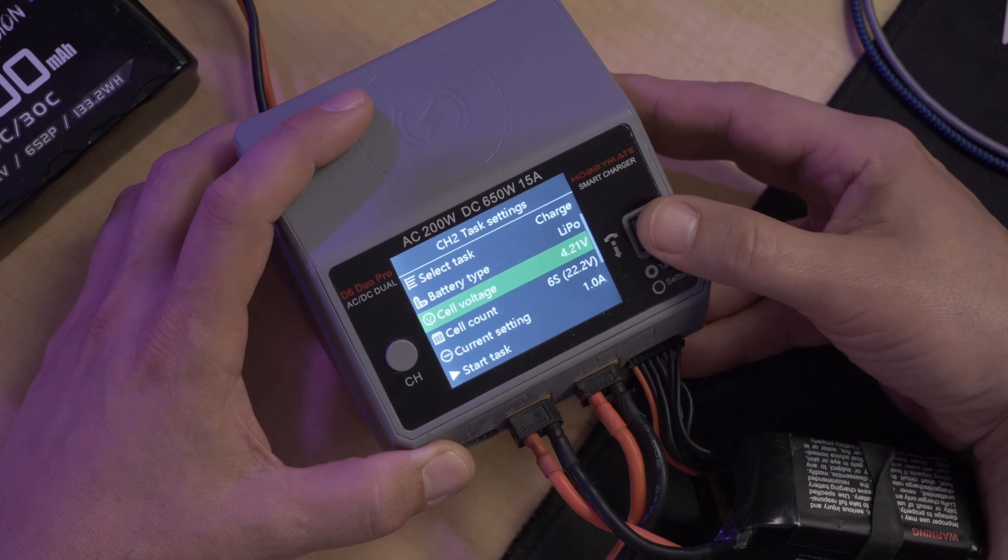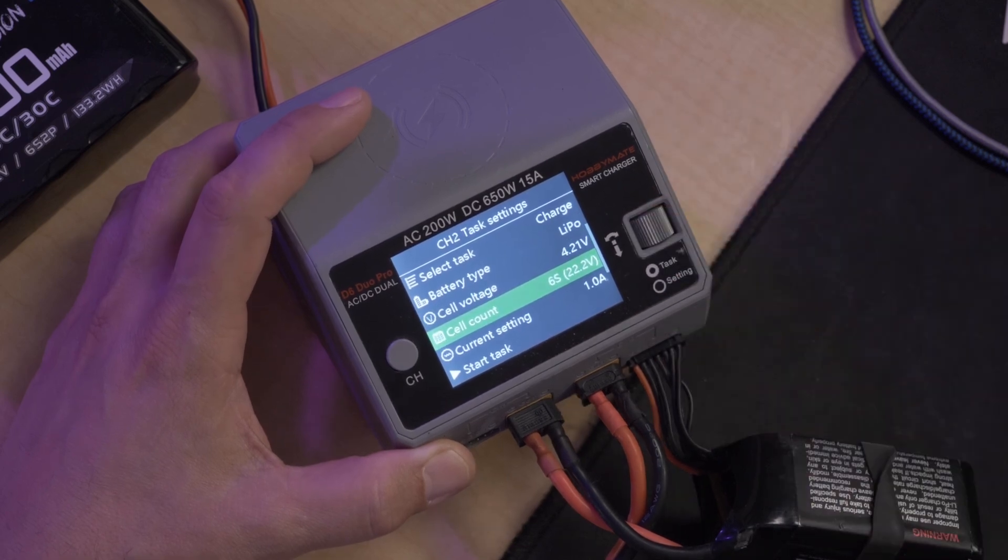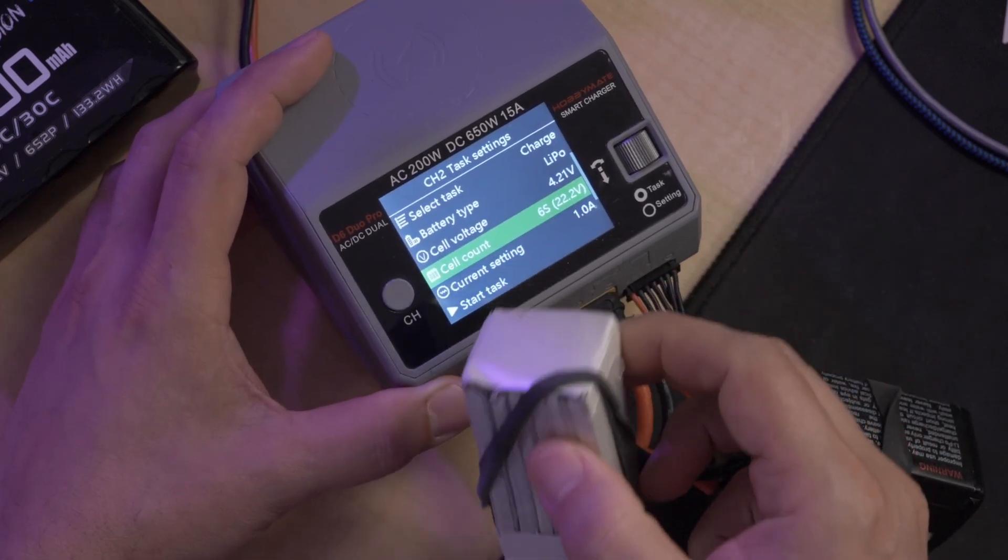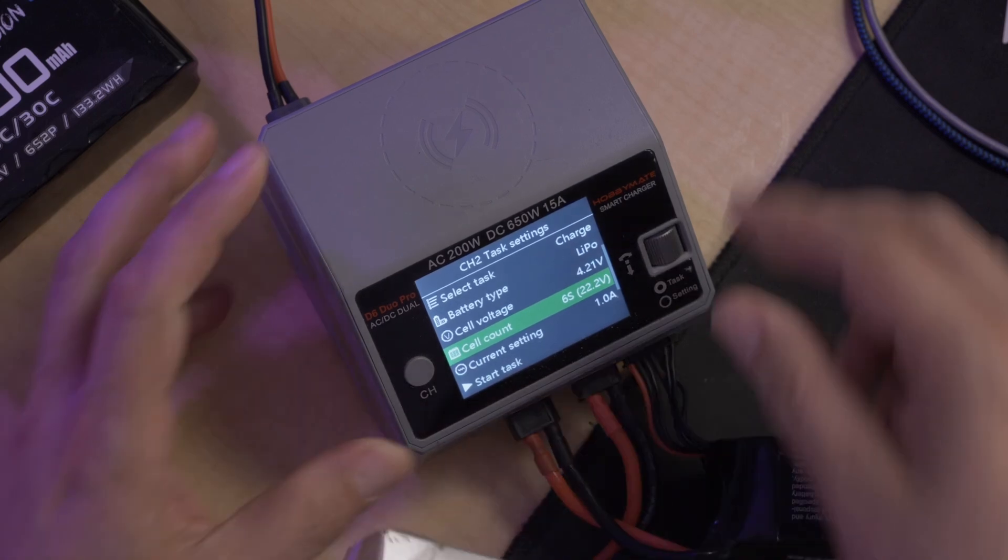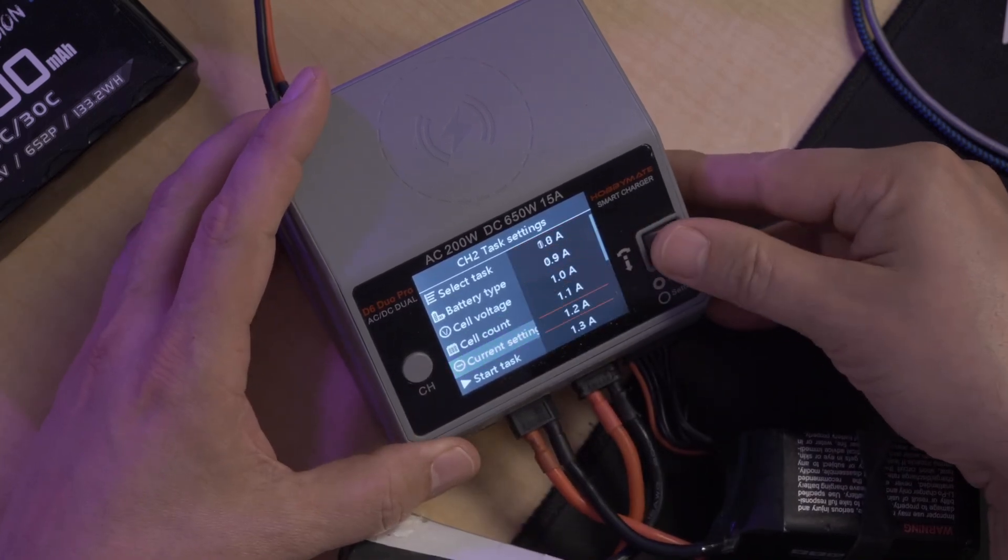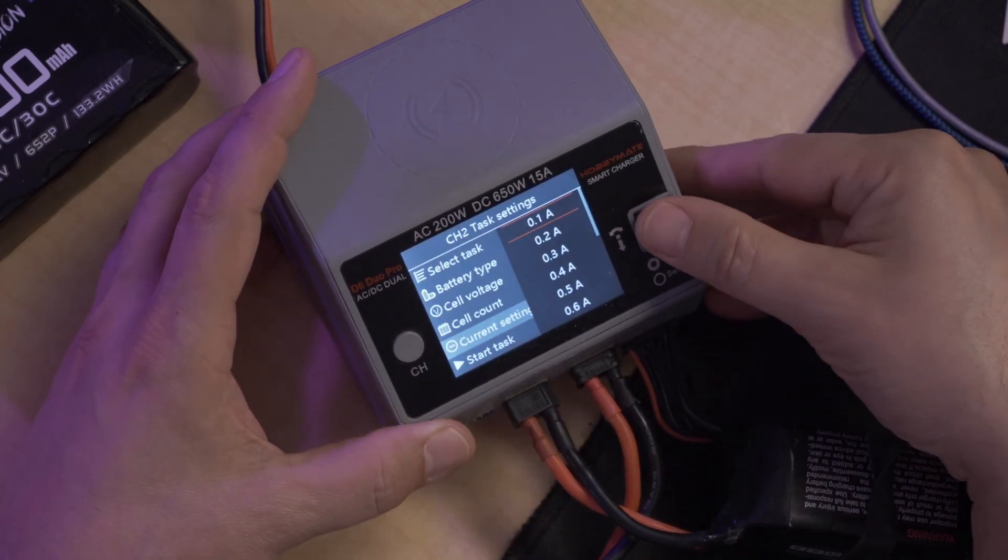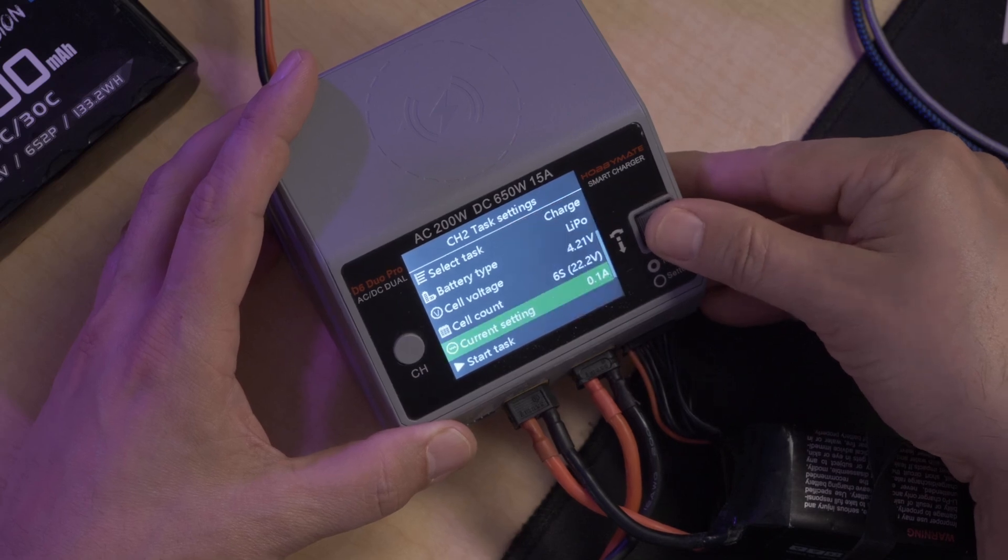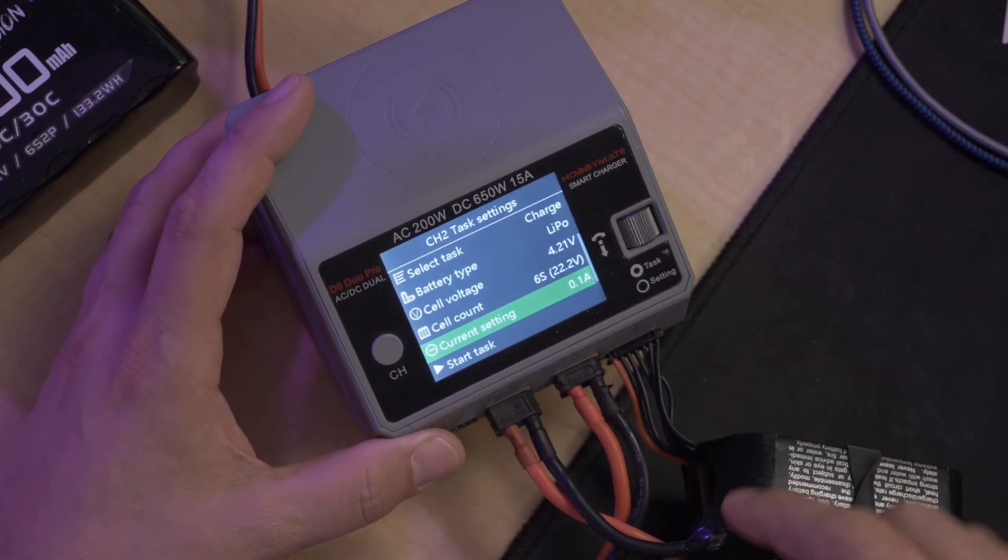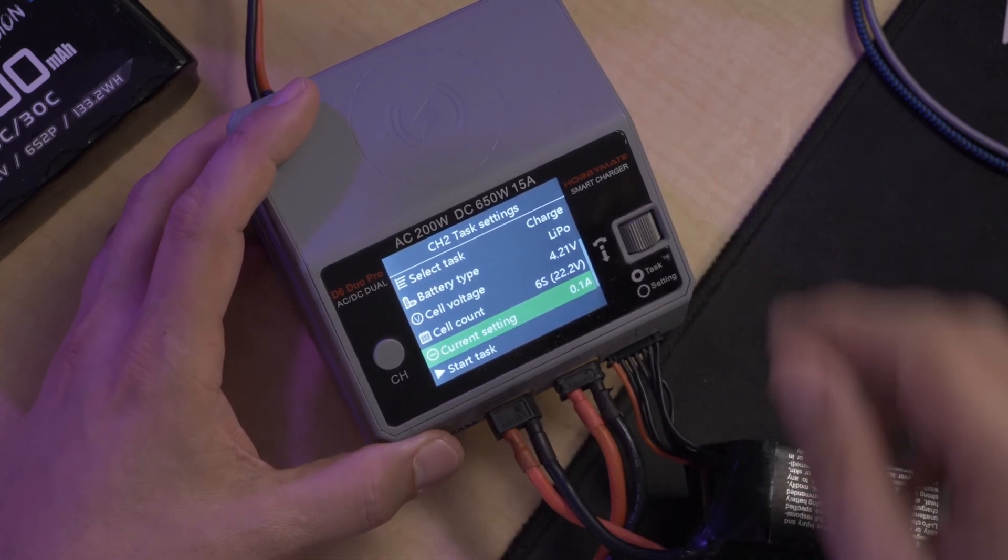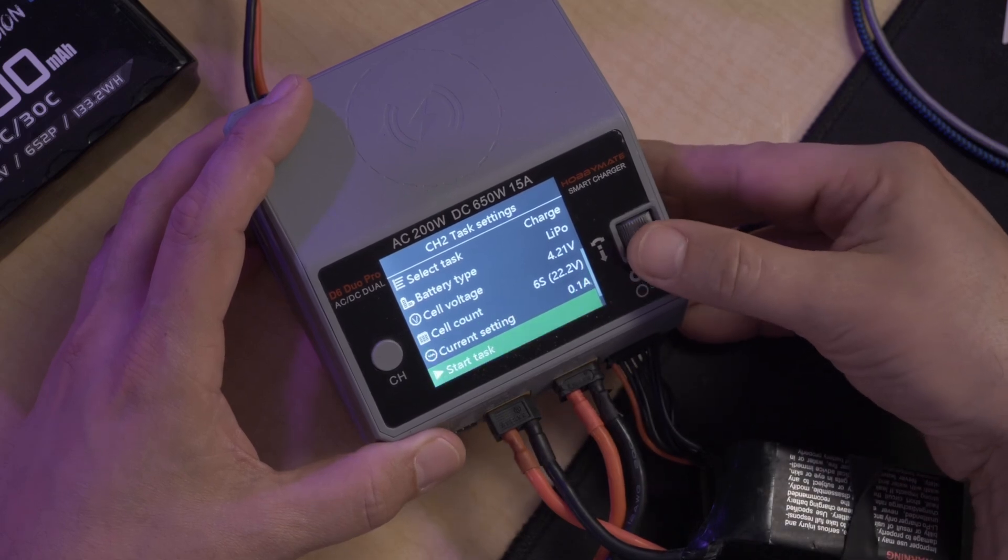If it does try to charge cycle, the worst that'll happen is that this battery, instead of getting one amp... I'm gonna put it at the minimum. Instead of getting 0.1 amps it'll be at a higher... no, but it won't. Anyway, there is no chance that it starts the charge cycle. Ready?